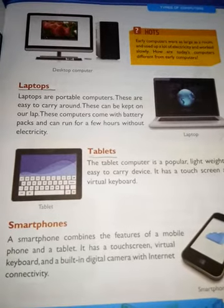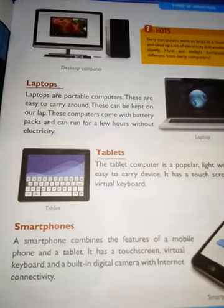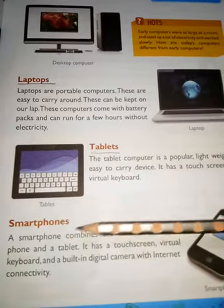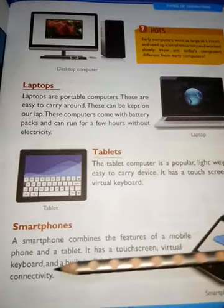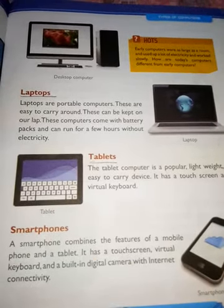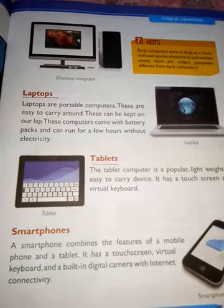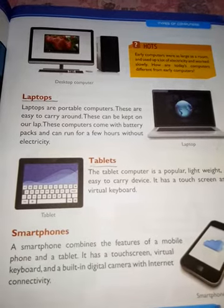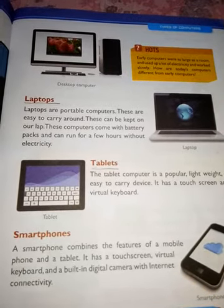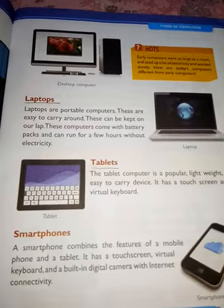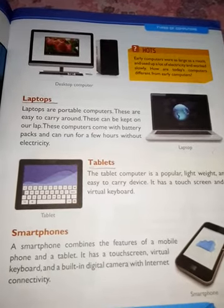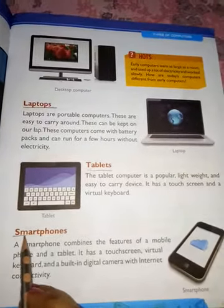Next is the smartphone. A smartphone is a combination of the features of a mobile phone and a tablet. It has a touch screen with a virtual keyboard, a built-in digital camera, and internet connectivity. Underline the word 'smartphone'.